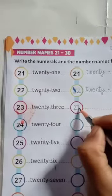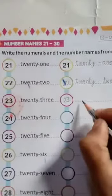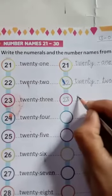Next 23. Now, we will write here numerals 23. And after that, we will write here number names of 23.